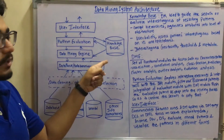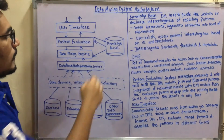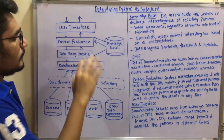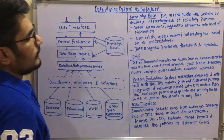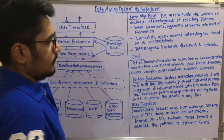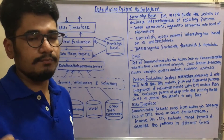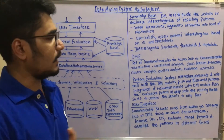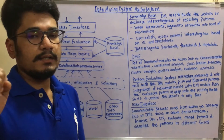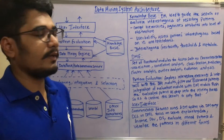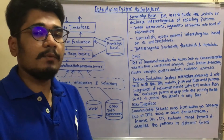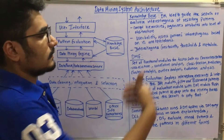There is a bi-directional arrow between the knowledge base and pattern evaluation — it can both insert new findings and pull references for transactions. For the data mining engine, you can only pull information from the knowledge base, not push. The knowledge base also stores interestingness measures, constraints, thresholds, and metadata. Metadata refers to heterogeneous information from different sources — web pages, Word files, PowerPoint, PDFs, databases, grids — essentially data about data.